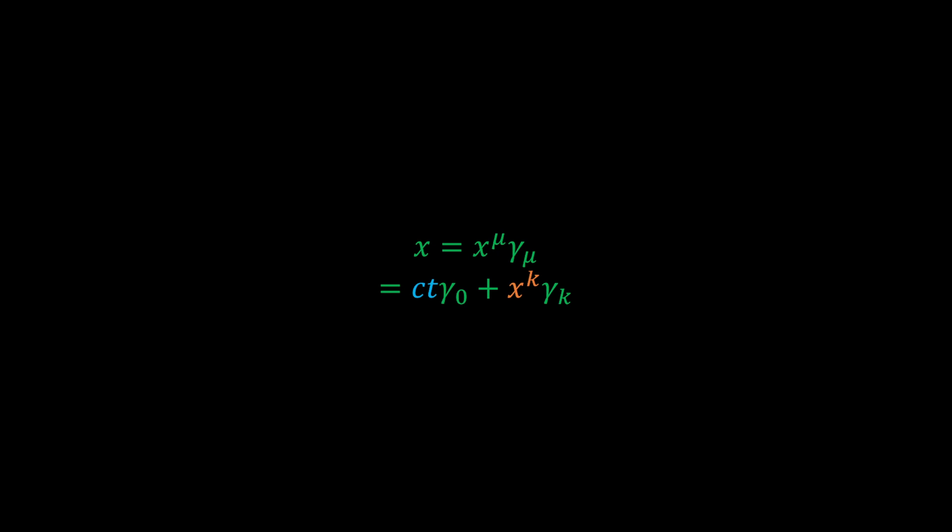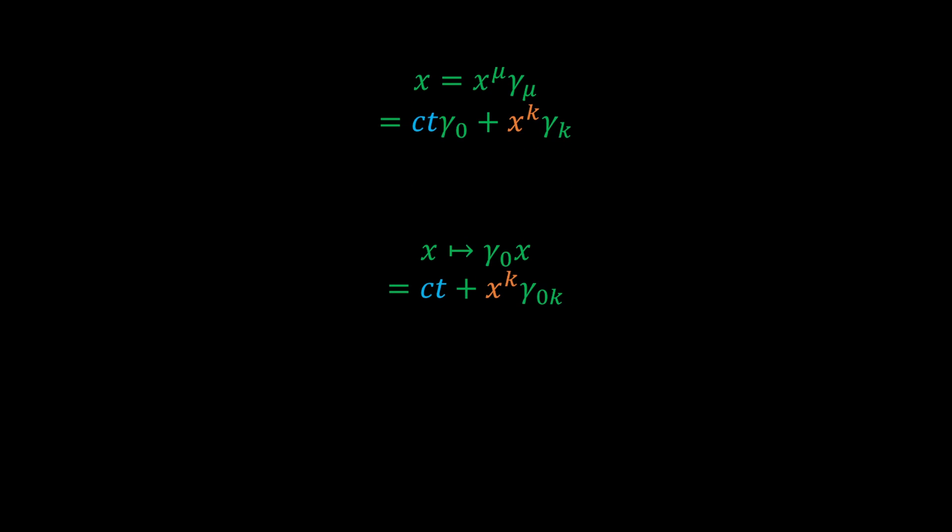Given the spacetime position x, this four-dimensional vector can be projected into a 3+1 dimensional object composed of a scalar and timelike bivector part. This is done through leftwise multiplication by the timelike basis vector. This is called a spacetime split, specifically because it splits the spacetime vector into a scalar time component and a timelike bivector component, which represents the position in physical 3-space as seen by the observer defined by the timelike basis vector. In general, any timelike vector defined as some observer's timelike rest frame vector will perform a spacetime split to that observer's rest frame. Therefore, Lorentz transformations aren't the only rest frame finding tool within the spacetime algebra.